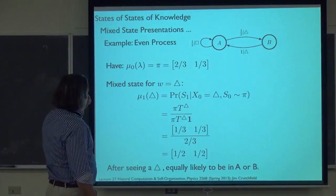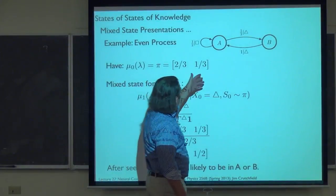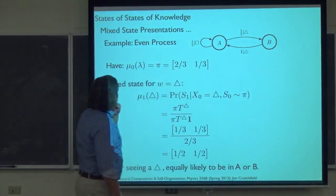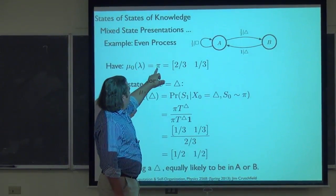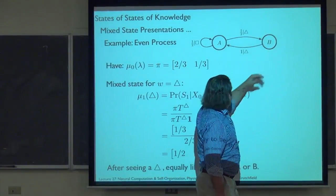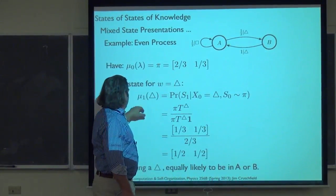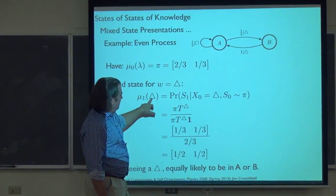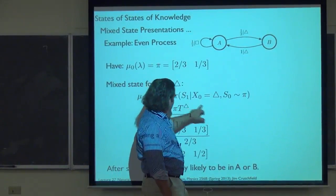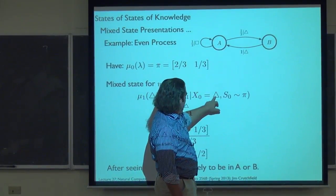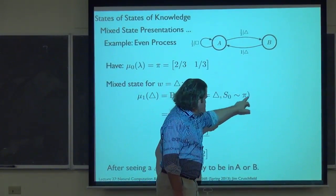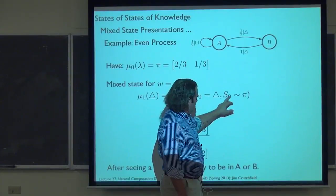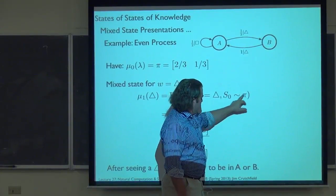For the even process — the even triangle process — we start the initial mixed state in the asymptotic state distribution: two-thirds in A, one-third in B. The question is: what's the mixed state at time step one having seen a triangle? We push pi forward using T_delta, then normalize. Pushing pi through T_delta: we have two-thirds in A, half of that is one-third going to A; one-third in B moves with probability one. So we get the partial distribution (one-third, one-third), which sums to two-thirds, normalizing to half and half.